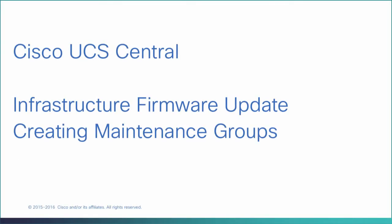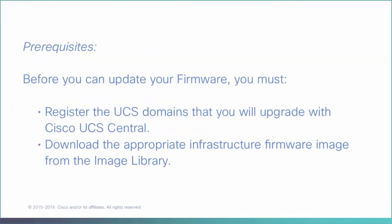Cisco UCS Central Infrastructure Firmware Update: Creating Maintenance Groups. Before you can update your firmware, you must register the UCS domains that you will upgrade with Cisco UCS Central and download the appropriate infrastructure firmware image from the image library.